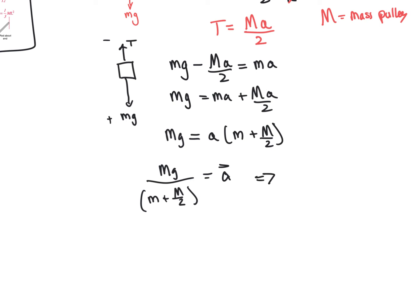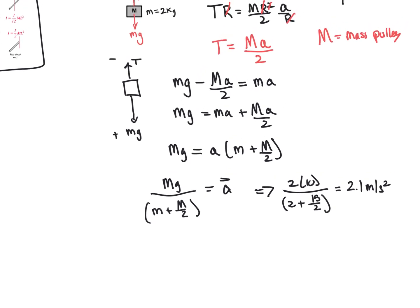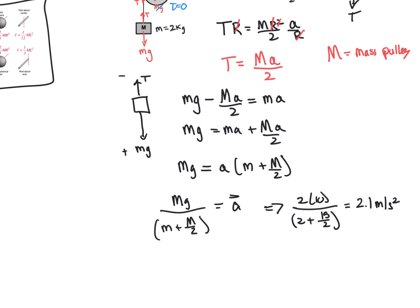So we get mg divided by little m plus big M over 2, and that will equal our acceleration. Now plugging in our numbers, little m is 2, gravity is 10, so 2 plus 15 over 2, so that is the mass of our big pulley. And that gives us approximately 2.1 meters per second squared. That is the acceleration of this non-ideal pulley.